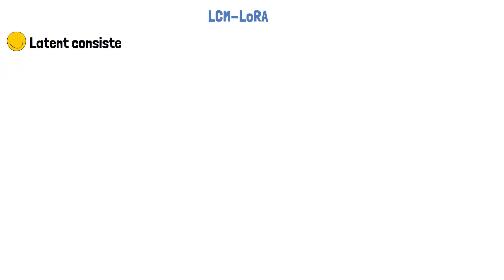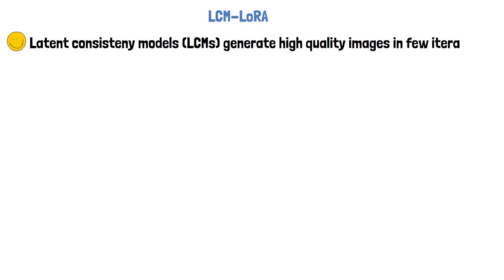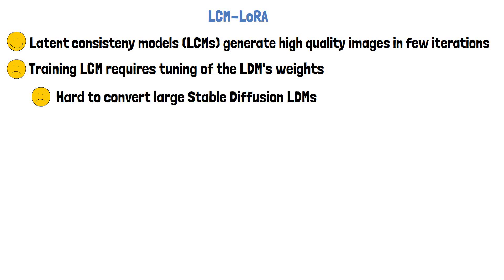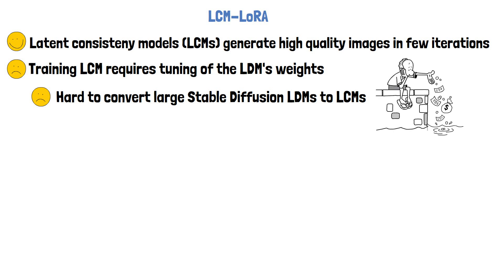So let's move on to talk about LCM LoRA. With latent consistency models we can generate high quality images in few iterations. However, training a latent consistency model requires tuning of the latent diffusion model weights. This makes it hard to convert large latent diffusion models such as SDXL to latent consistency models, since they have a large number of weights, making this a costly process. Additionally, we need to rerun this costly process for each style-tuned version that we need.